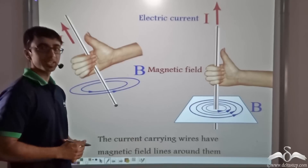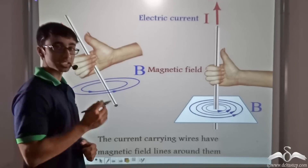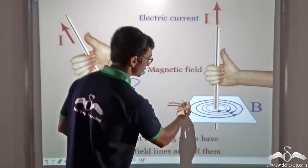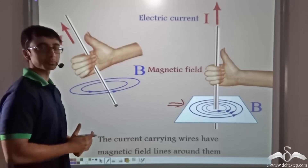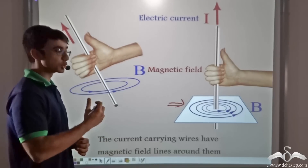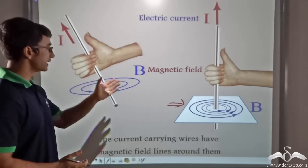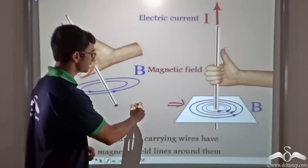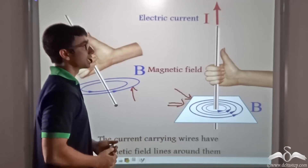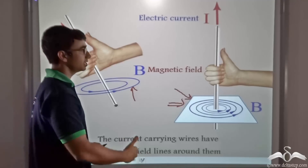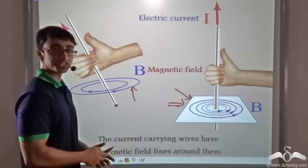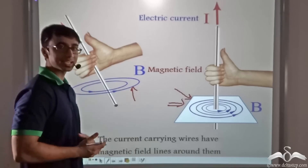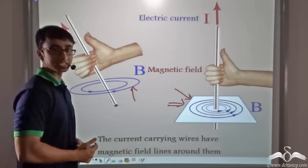Hans Christian Oersted, a Danish scientist, had discovered that when a conductor carries current, it produces a magnetic field around it. We have studied the properties of the magnetic field that a current carrying conductor produces. As you can see in the picture, the current carrying wires have a certain magnetic field around them depicted by the magnetic field lines. The direction of the magnetic field lines can be obtained with the right hand thumb rule. Now let us see an interesting video to find out the behavior of this current carrying wire in the presence of another magnetic field.